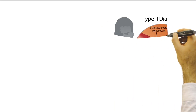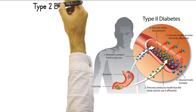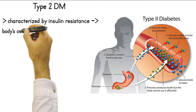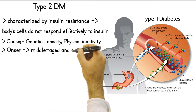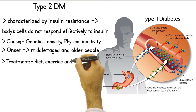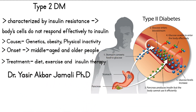Type 2 diabetes (T2D). Cause: Type 2 diabetes is characterized by insulin resistance, where the body's cells do not respond effectively to insulin, and a relative insulin deficiency. Genetics and lifestyle factors such as obesity and lack of physical activity contribute to its development. Onset: It usually occurs in adulthood, but due to lifestyle changes, it is increasingly being diagnosed in children and adolescents. Treatment: Initially, lifestyle modifications — diet and exercise — are recommended, but medication or insulin therapy may be required as the condition progresses.